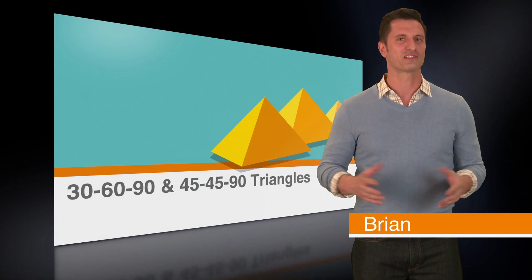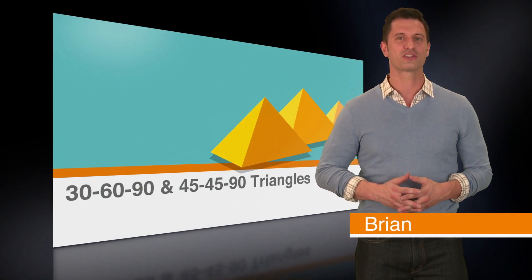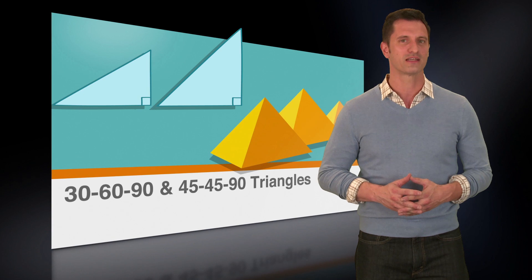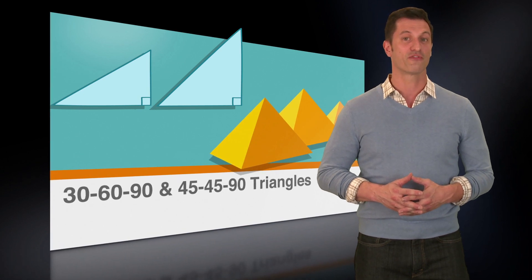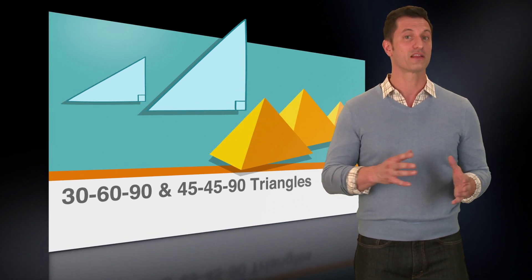So we've got the basics of right triangles down. Now let's talk about two special right triangles that you'll see on the ACT: the 45-45-90 and the 30-60-90 triangles. You'll need to memorize the angles and side length relationships of these triangles for the test.